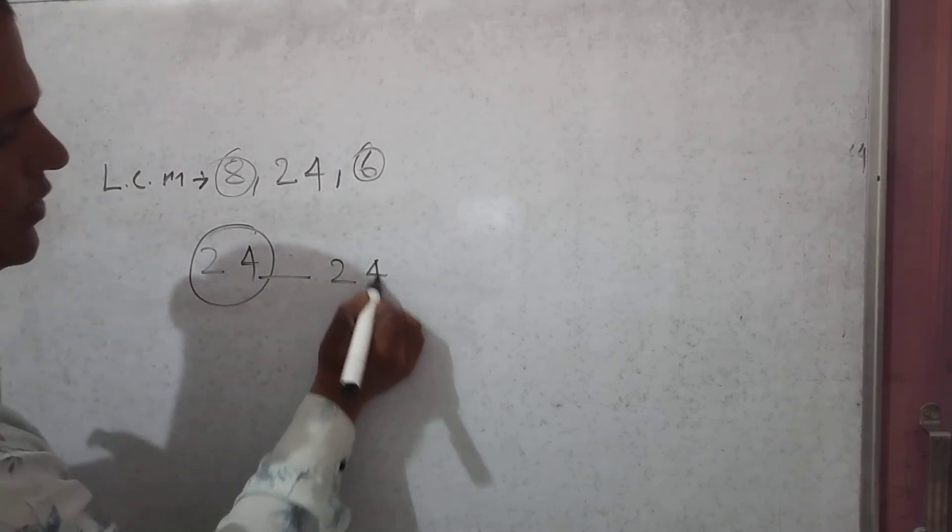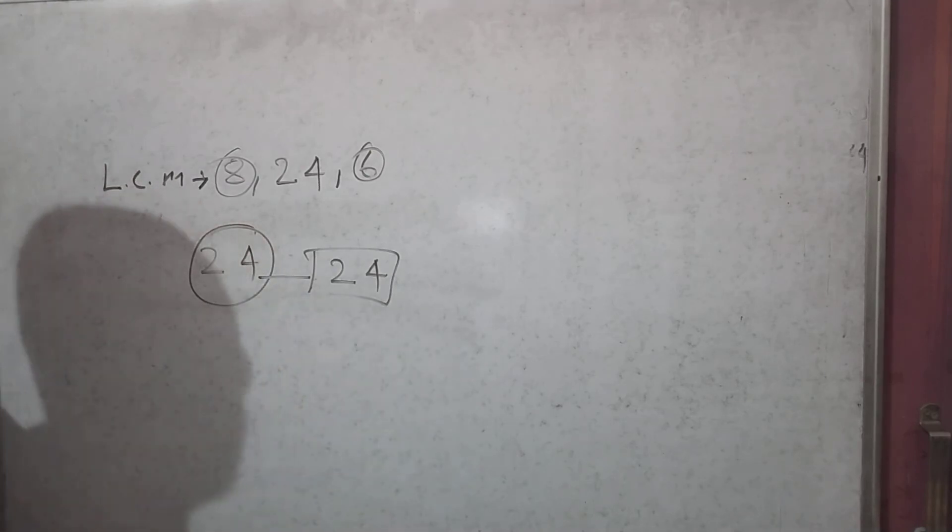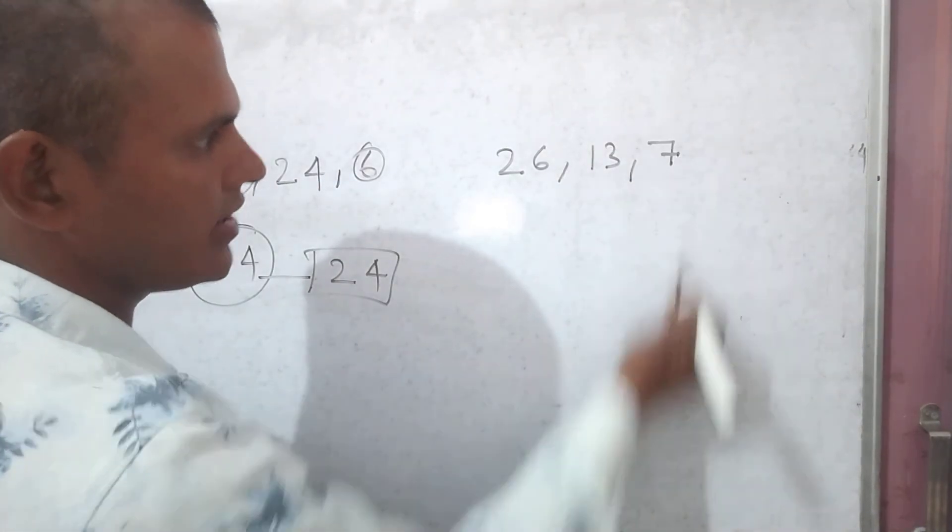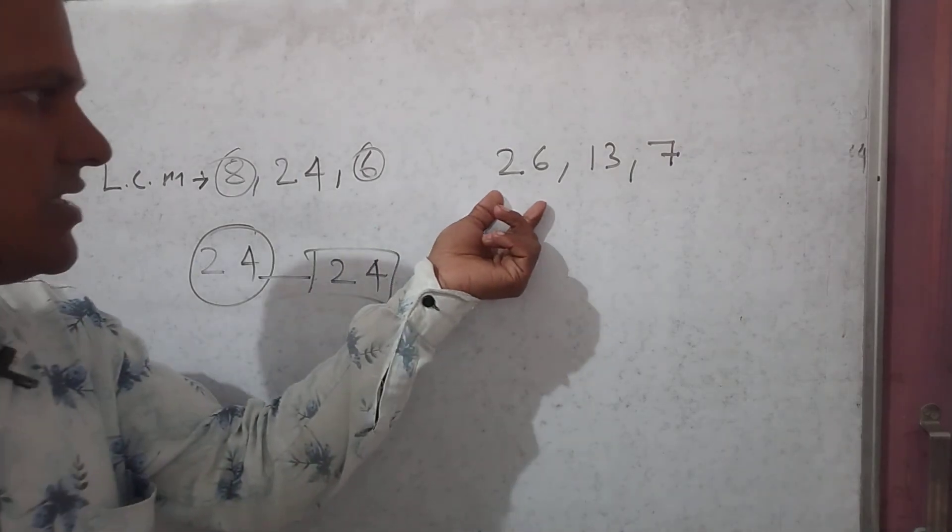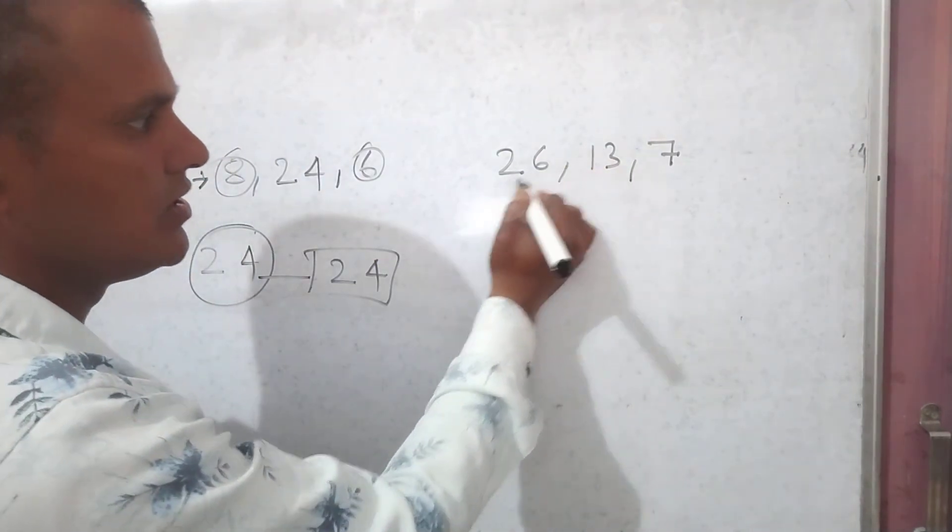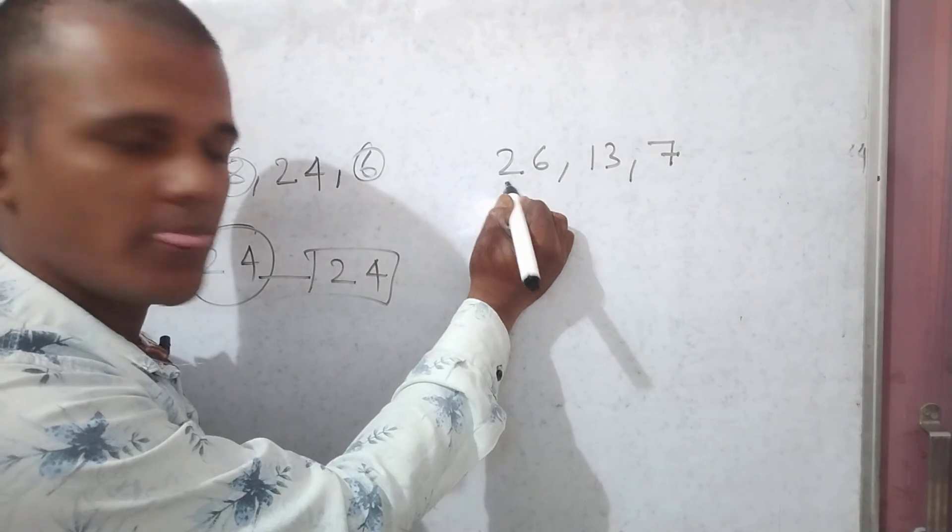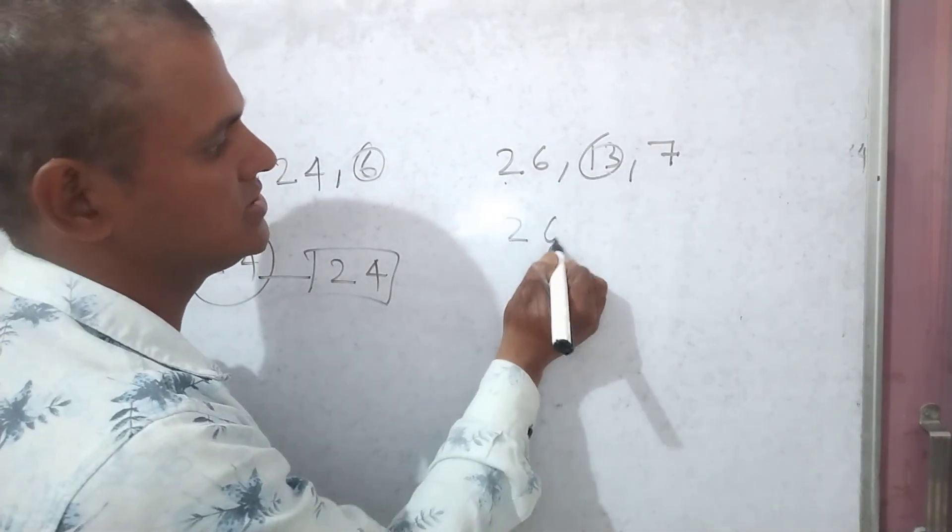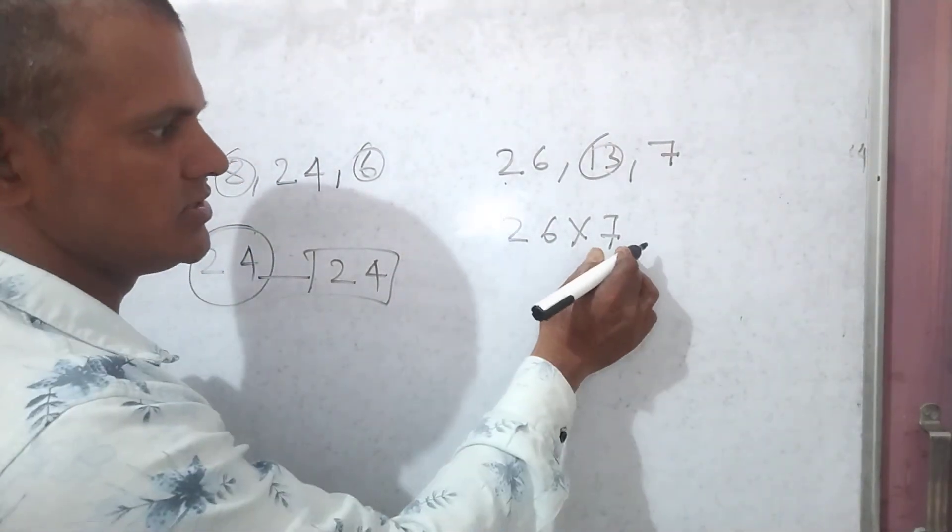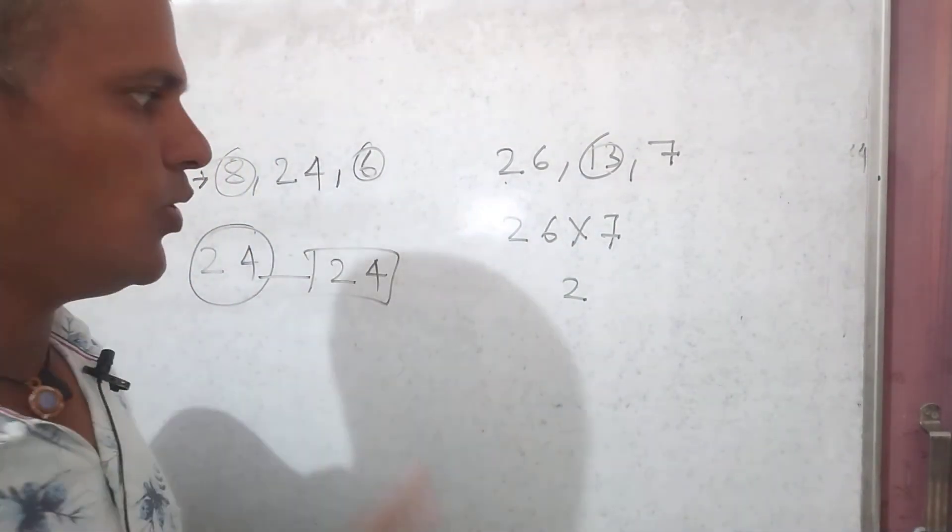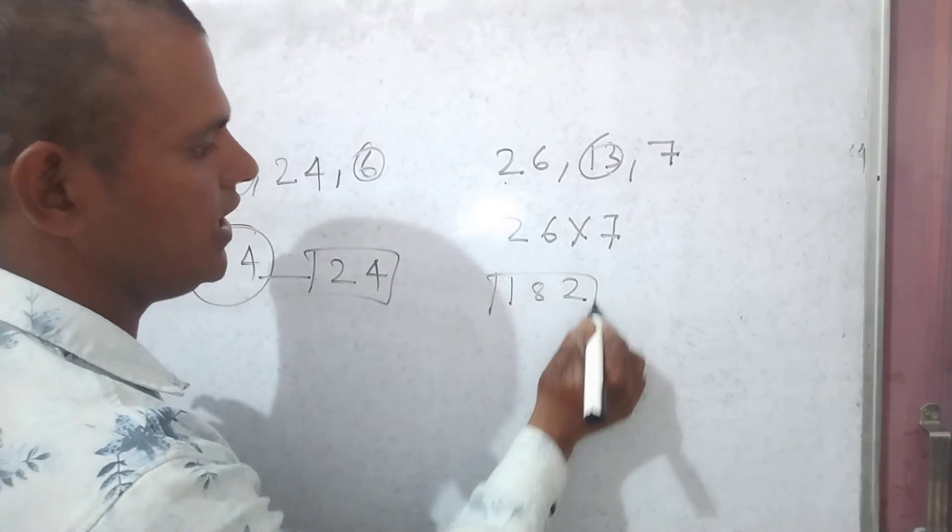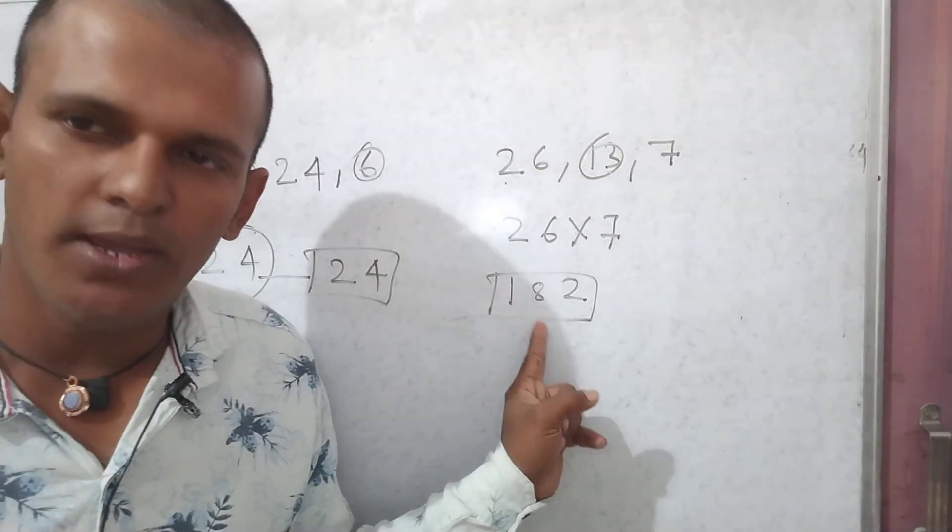Look at next number: 26, 13, and 7. What is the biggest number here? 13 and 7 are prime numbers, but 26 is not a prime number. But 26 is divisible by 13, so neglect it. And 26 into 7. LCM will be 26 into 7: 7 times 6 is 42, remaining 4, 7 times 2 is 14, and 4 will be 182. So LCM of this number is 182.